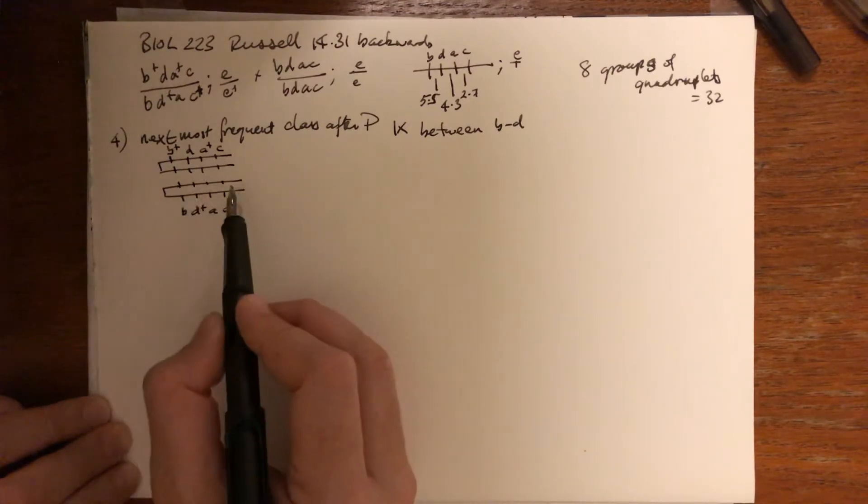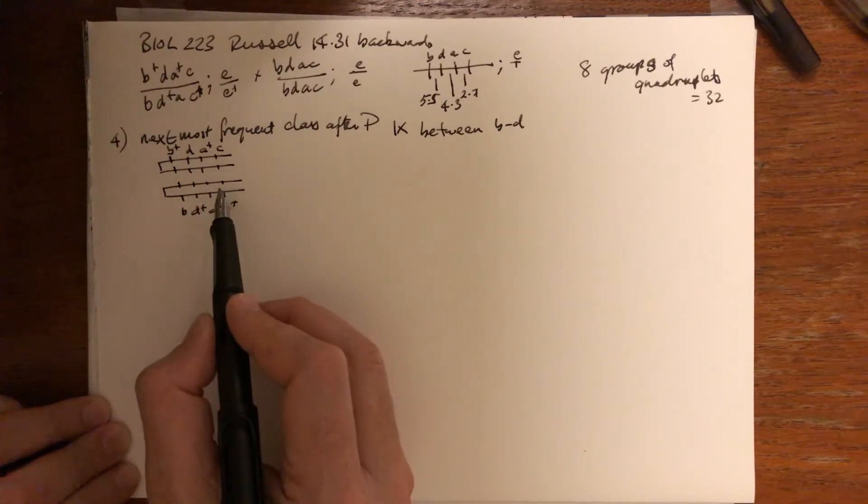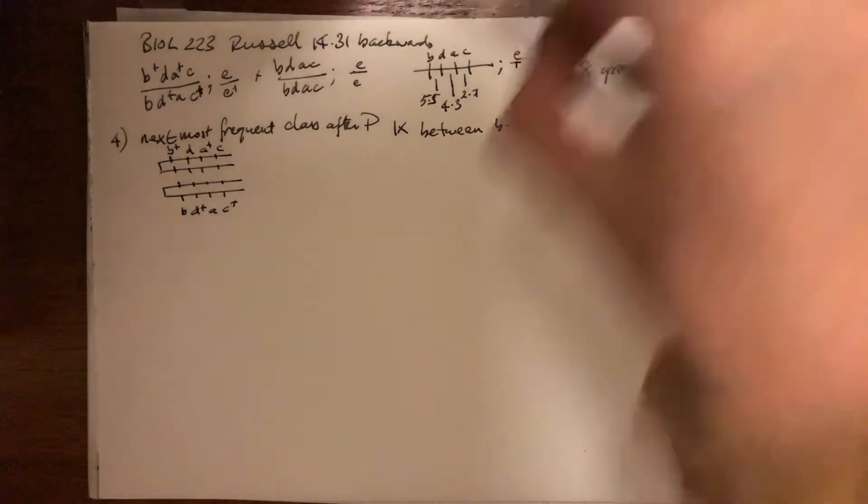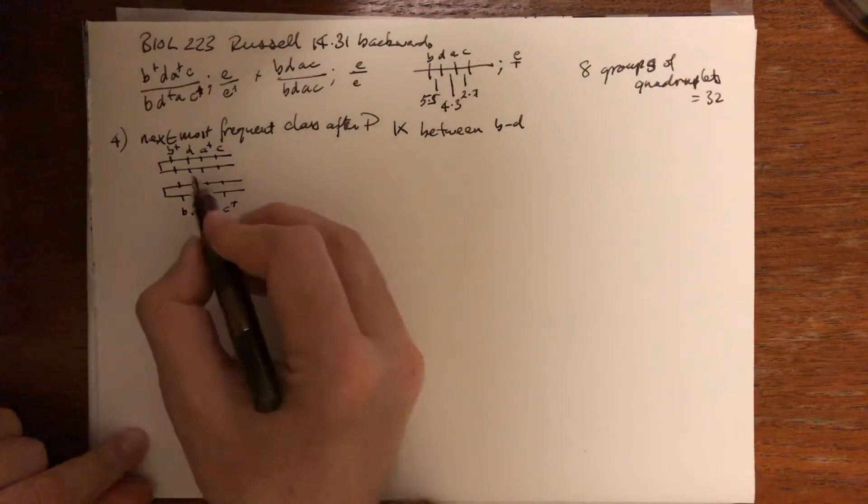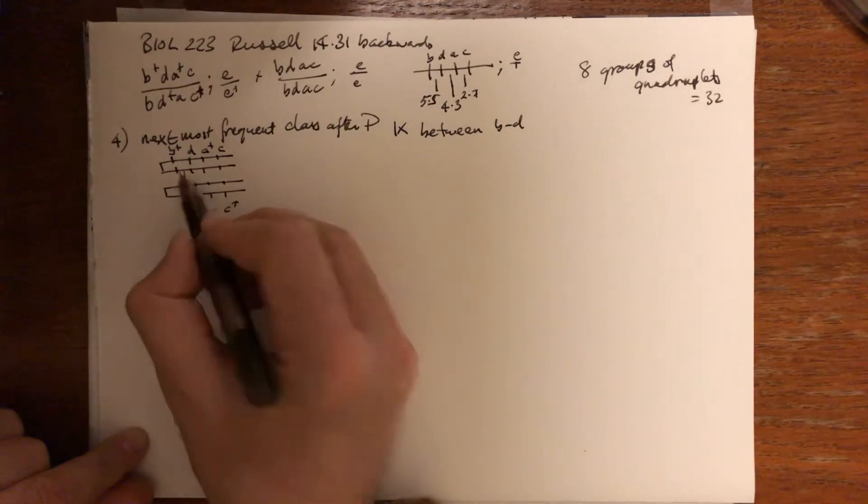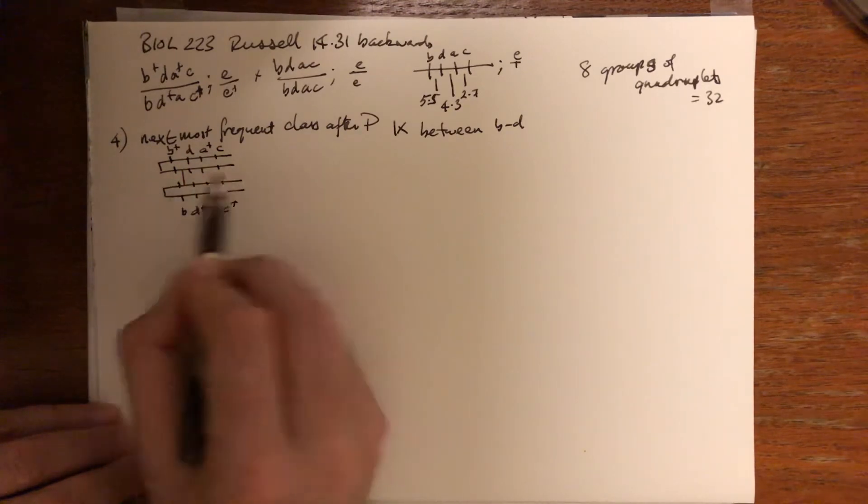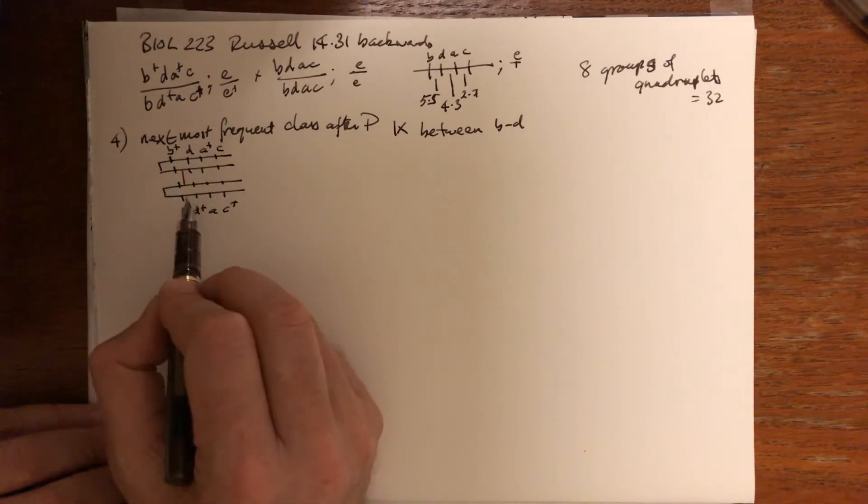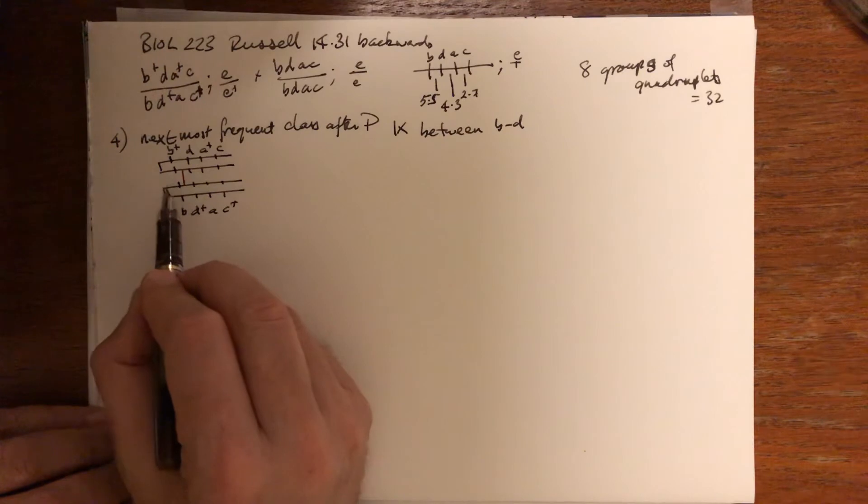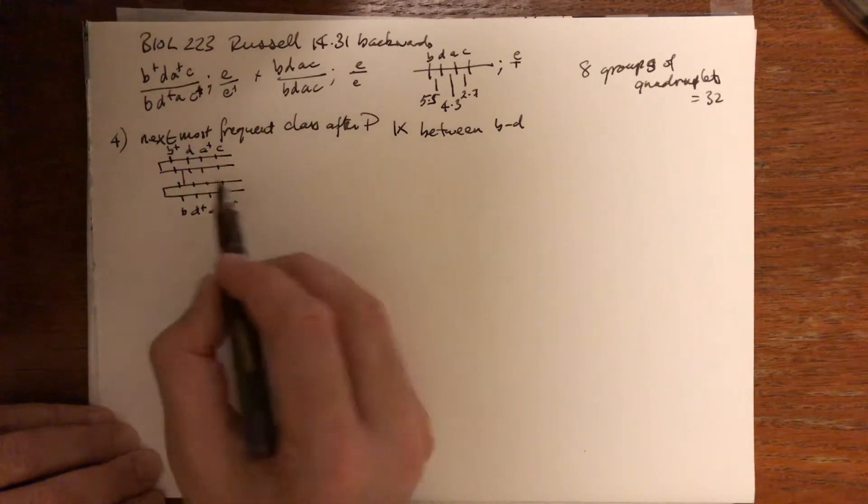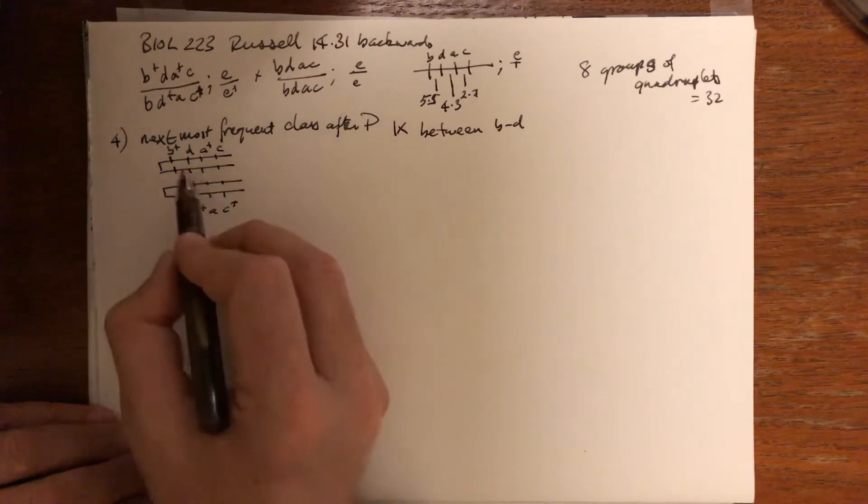We're looking at what happens in her meiosis. Here we expect the most frequent class with crossing over between B and D—it's 5.5. So crossing over occurs here, then when this four-strand stage is resolved after meiosis II, we have the four.